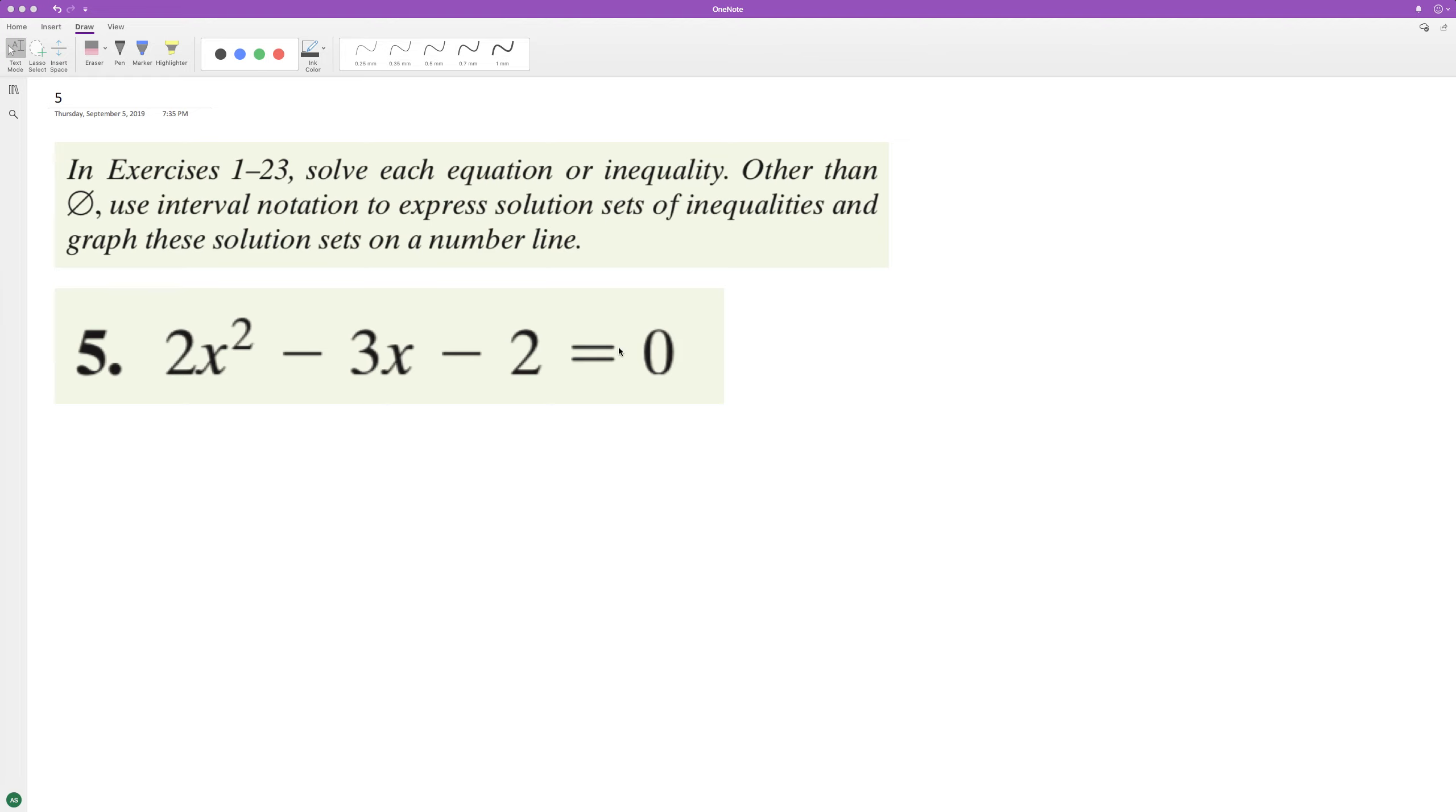For this problem, we can do this a bunch of different ways. We can try factoring and guessing, but I'm going to go ahead and use the quadratic equation, which is equal to the opposite of b plus or minus the square root of b squared minus 4ac over 2a.